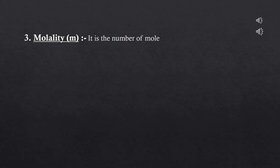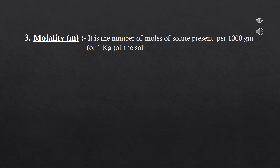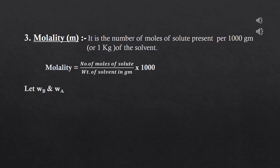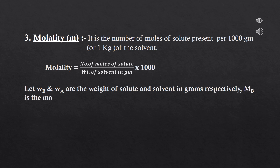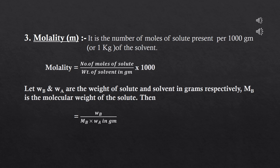The third concentration term is molality, denoted by small m. It is the number of moles of solute present per 1000 grams (1 kg) of solvent. Molality = (number of moles of solute / weight of solvent in grams) × 1000, or m = (W_B / M_B) × (1000 / W_A), where W_B and W_A are weights of solute and solvent respectively. Molality is independent of temperature because the volume term is replaced by the weight of solvent.